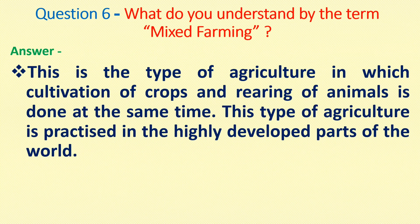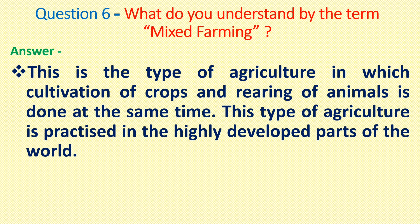Question number six: What do you understand by the term mixed farming? Answer: This is the type of agriculture in which cultivation of crops and rearing of animals is done at the same time. This type of agriculture is practiced in the highly developed parts of the world.